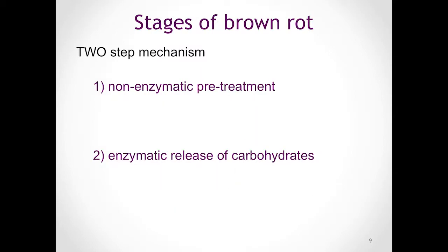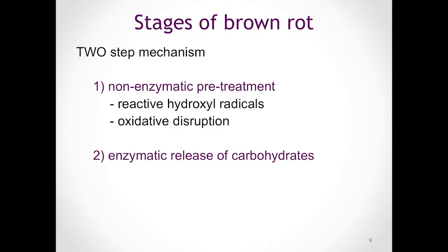What we know about brown rot decay today is that it proceeds as a two-step mechanism. We can identify a first non-enzymatic step, a type of pretreatment, and secondly, we can identify an enzymatic release of carbohydrates. In the pretreatment, we will find reactive hydroxyl radicals that are generated during the Fenton reaction, which will then lead to an oxidative disruption as a type of pretreatment that loosens up the individual layers of the secondary cell wall.